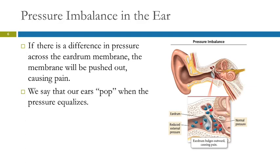Pressure explains why your ears pop. If you fly in an airplane, the cabin is pressurized because otherwise everybody would pass out at cruising altitude. But the pressure is a little lower than what's present on the ground, and so our ears pop. If you drive up to Grant Grove, your ears pop, and when you come back down, they pop again.